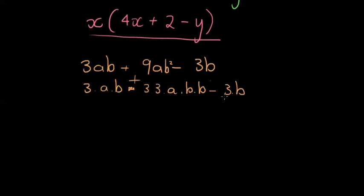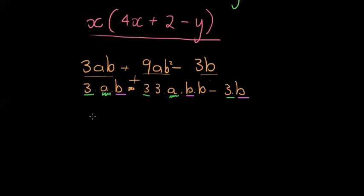We have three terms here. What do we have in common? We have a 3 in all three terms. We don't have an a in all terms — a is not common. For b: the first term has one b, the second has two b's, and the third has one b — so the maximum we can take out is one b. The greatest common factor is therefore 3b.